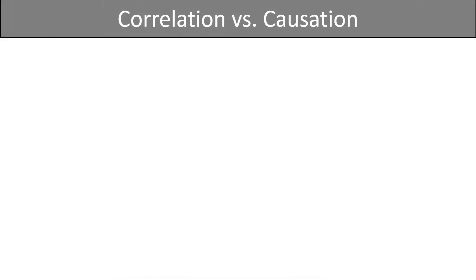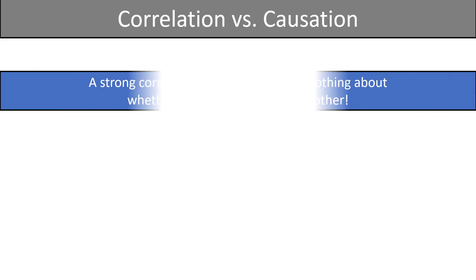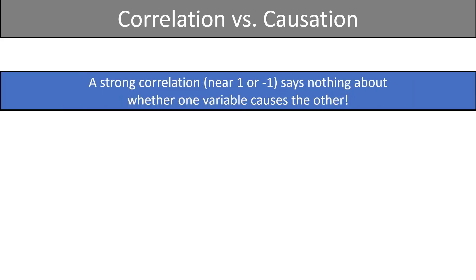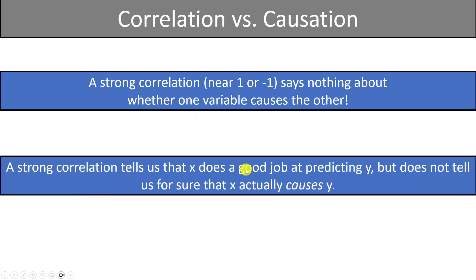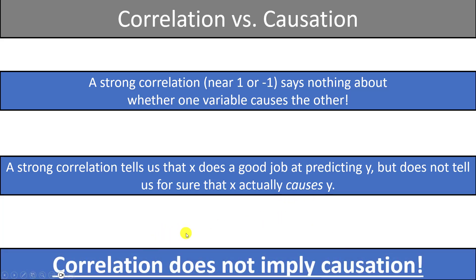Next we need to talk about the difference between correlation and causation. The correlation coefficient describes how strong a relationship is between two variables, but it tells us nothing about whether one variable causes the other. A strong correlation tells us that x will do a good job predicting y, but it does not tell us that x is actually causing y — hence the phrase 'correlation does not imply causation.'